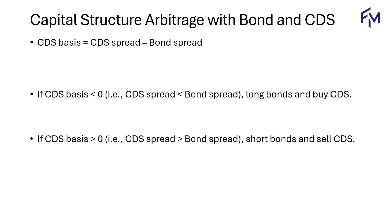If the CDS basis is negative, which means that the CDS spread is lower than the bond spread, then the strategy is to long the bonds and buy the CDS. And when the CDS basis is positive, we will short sell the bonds and sell the CDS.